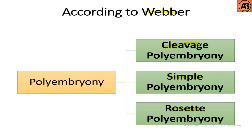Cleavage polyembryony occurs when a young embryo or zygote divides into two or more units. Simple polyembryony occurs when more than one egg or many archegonia eggs are fertilized. Rosette polyembryony occurs when additional embryos emerge from the rosette cells in some gymnosperms, and this kind of polyembryony is known as rosette polyembryony.